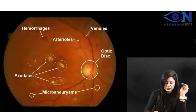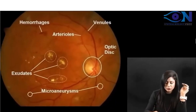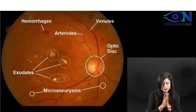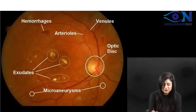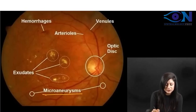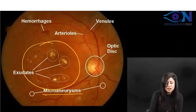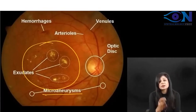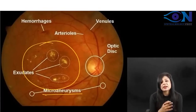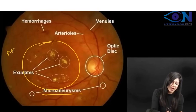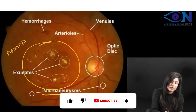In this image, you can see the marked findings. The micro-aneurysms are very small. You can see the optic disc, and this area here is the macula. In the macular area, there is so much exudate — this is a case of maculopathy.